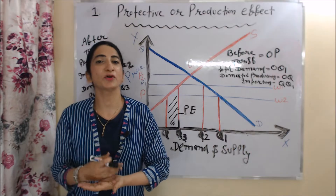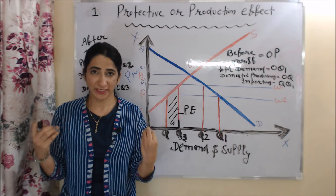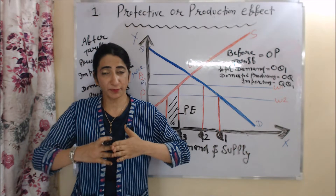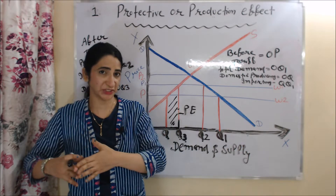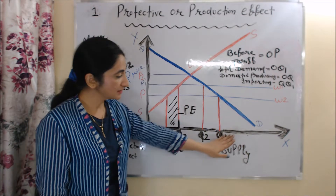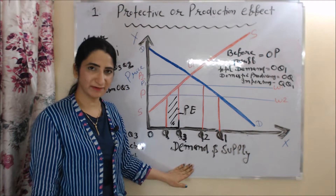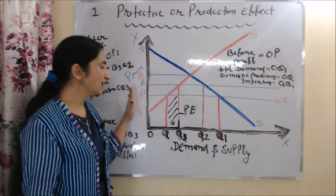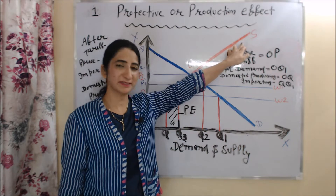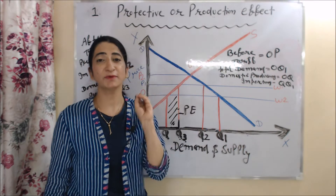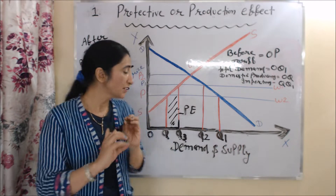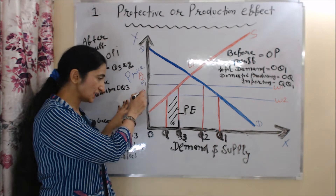First, we talk about the protective or production effect. A protective effect means we basically impose tariff so that we can protect our home country from foreign competition. We understand each effect with the help of a diagram. In this diagram, on the x-axis we have demand and supply, and on the y-axis we have price. DD is domestic demand and SS is domestic supply.